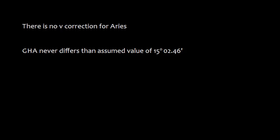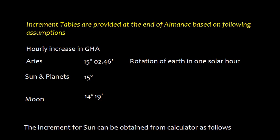Increment tables are provided at the end of Almanac based on the following assumption. For Aries, the value is 15 degrees 02.46 minutes but for planets, the value is 15 degrees and for moon, this is slightly less which is 14 degrees and 19 minutes. I will tell the reason why it is taken slightly less.